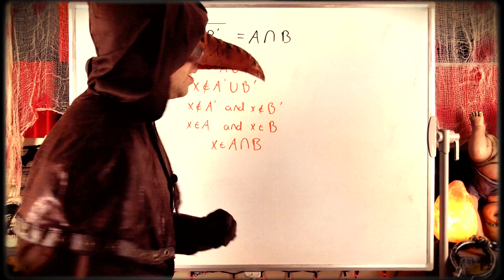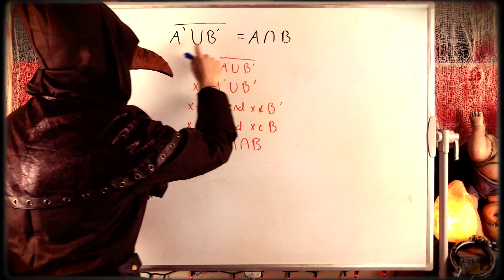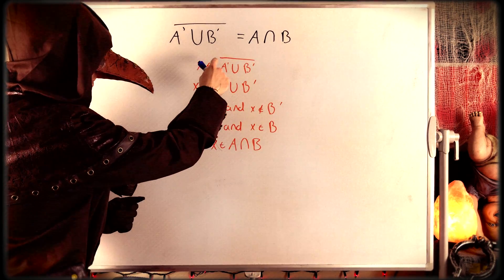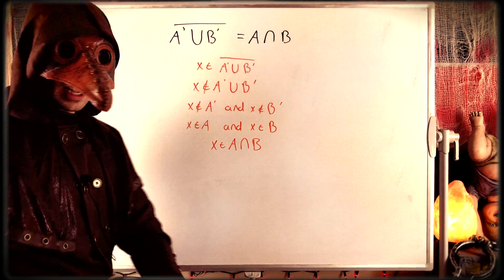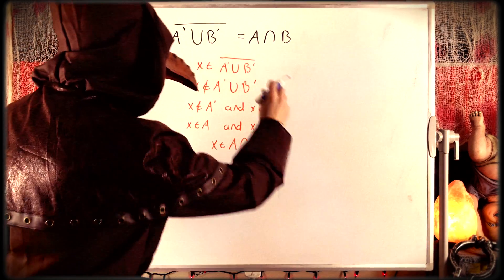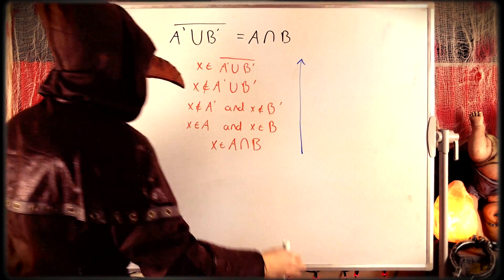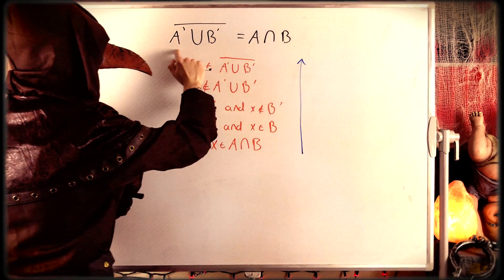Then all that remains to be shown is that this is a subset of this. Turns out that's super easy, because all we were doing were basic logical applications of definitions here. So in fact, you can just take what we wrote and spin it the other direction, go backwards, and you will prove that this is a subset of this. I'll just talk you through it.